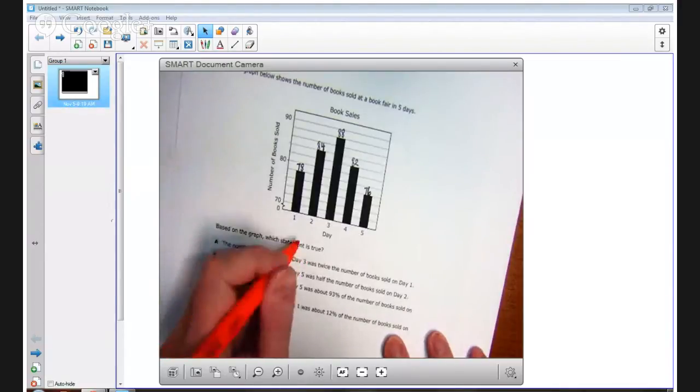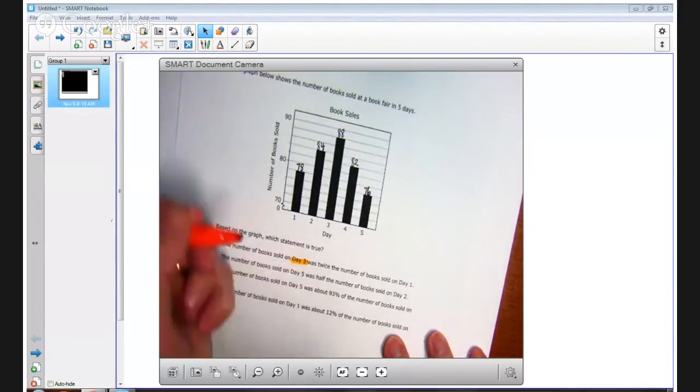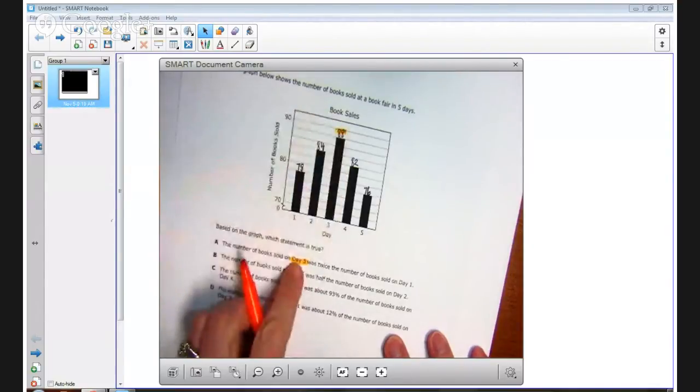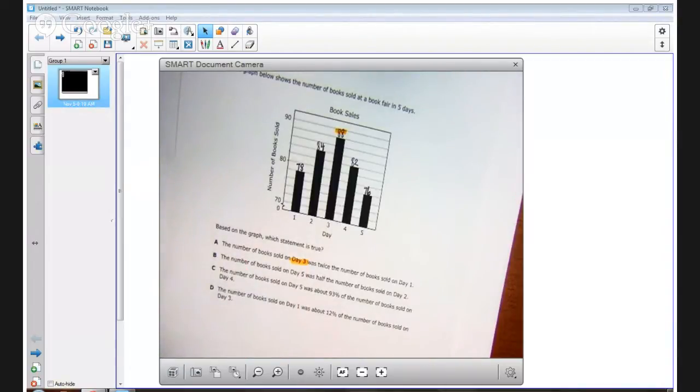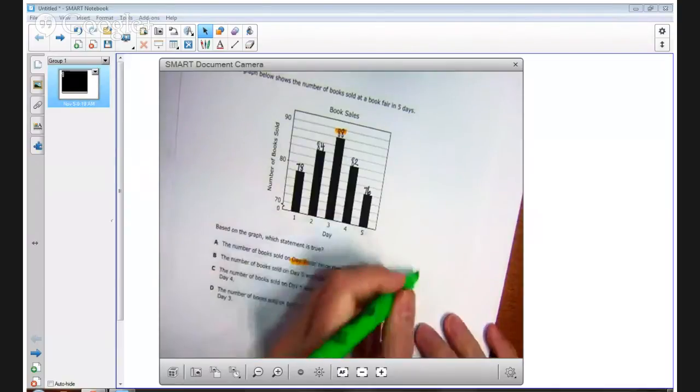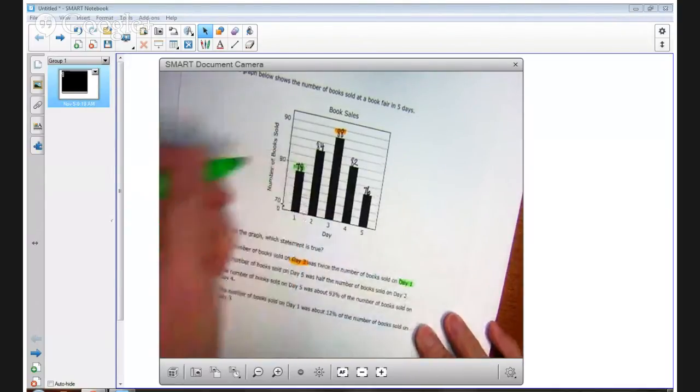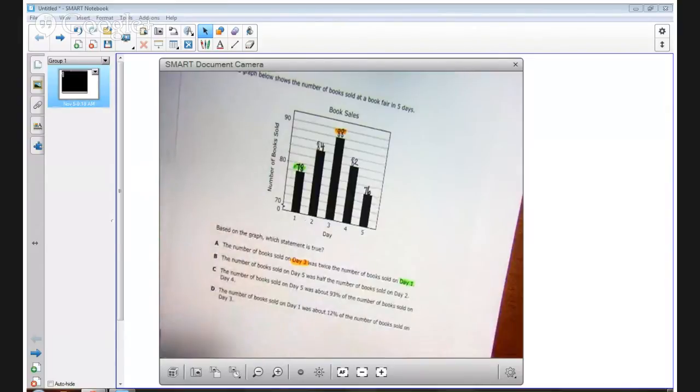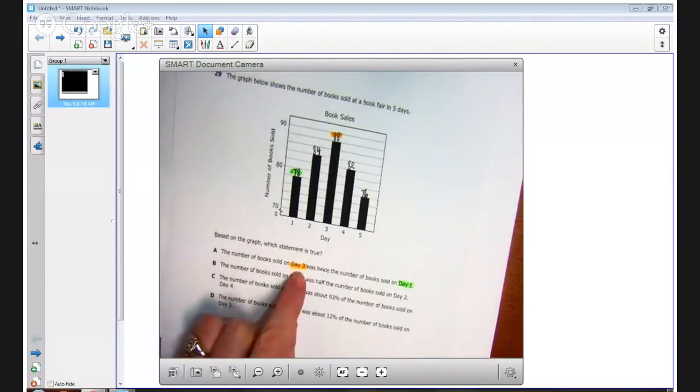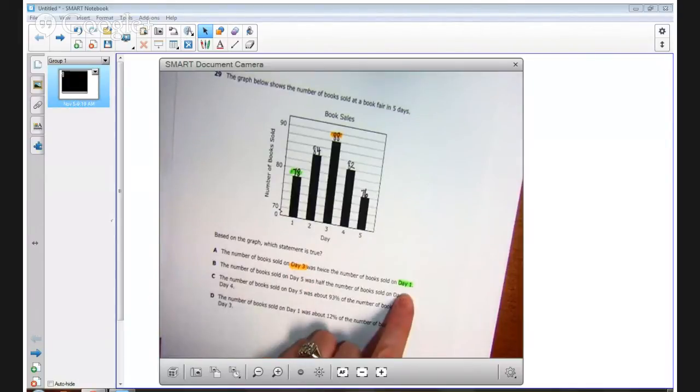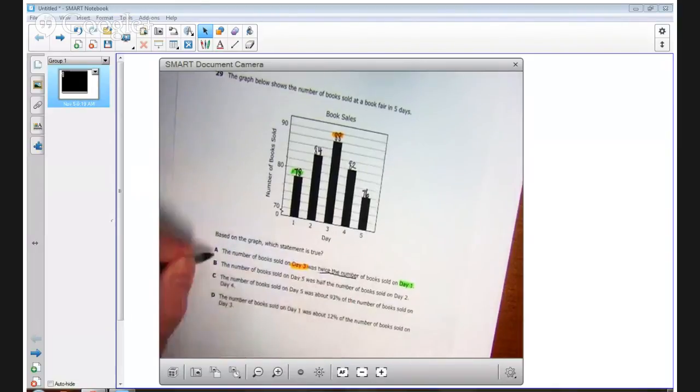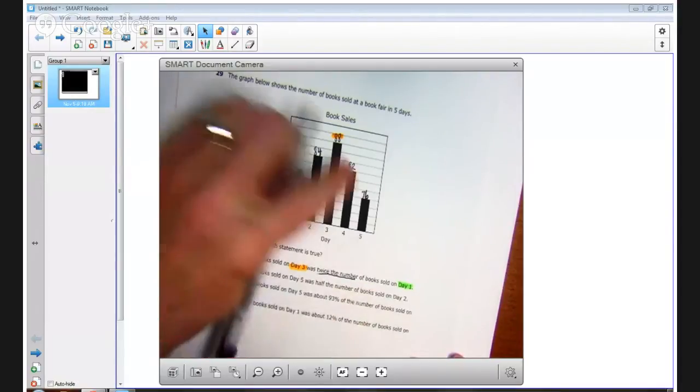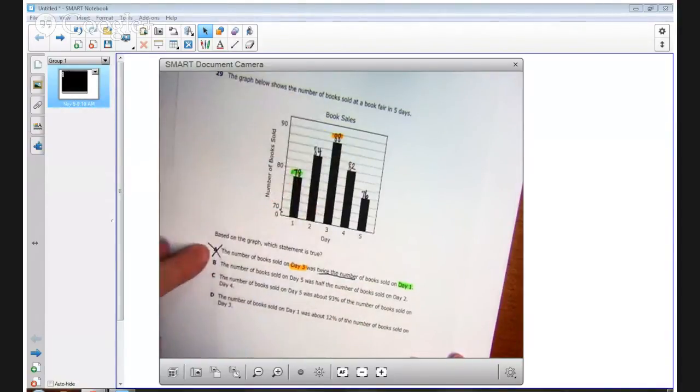A says the book sold on day three. So the book sold on day three was 88. I'm highlighting the 88 for day three. Was twice the number of books sold on day one. I'm going to choose a different color and highlight day one in that color. So day one, I'm going to highlight that in green. So now looking at that answer choice A, you can see the number of books sold on day three was 88. The number of books on day one was 78. That's clearly not twice the number. So this answer is incorrect. We'll cross that one out.